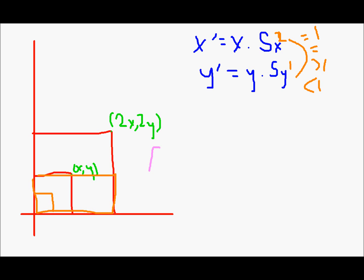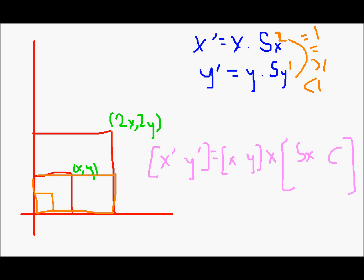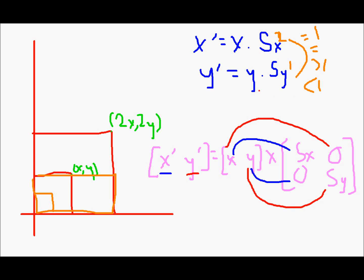The matrix equation for scaling is: [x', y'] equals [x, y] multiplied by the 2×2 matrix with sx and 0 in the first row, and 0 and sy in the second row. So x' equals x·sx + y·0 = x·sx, and y' equals x·0 + y·sy = y·sy. I hope this video helps you, thank you very much for listening.